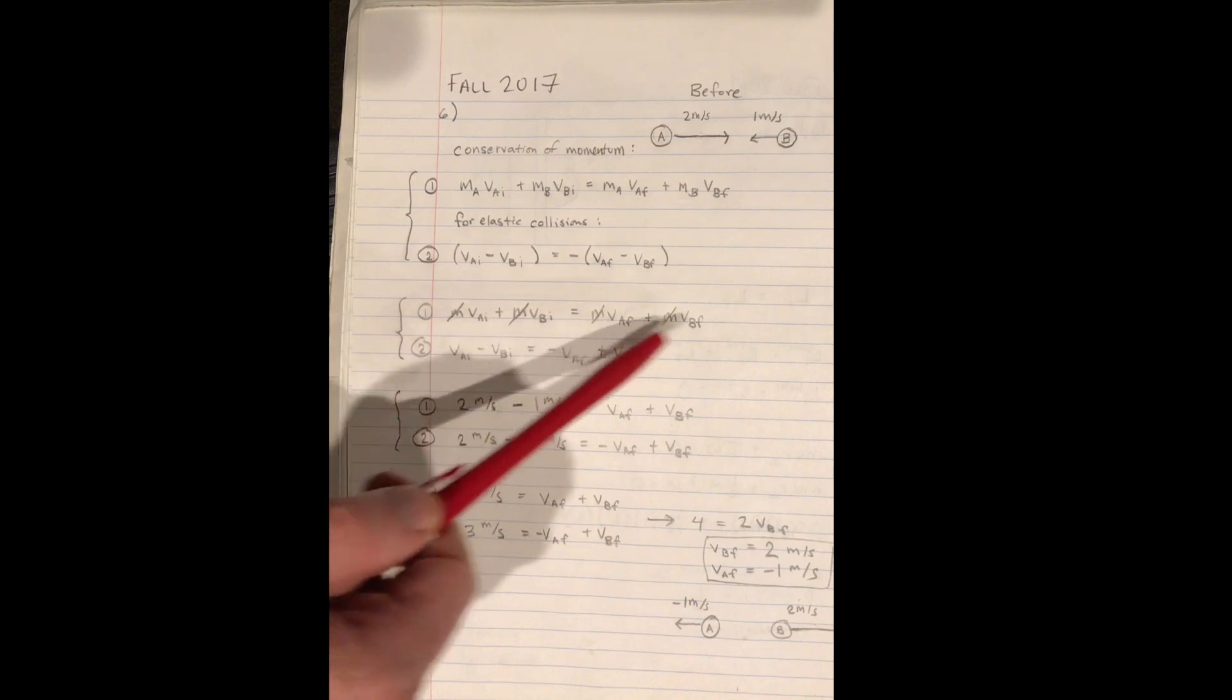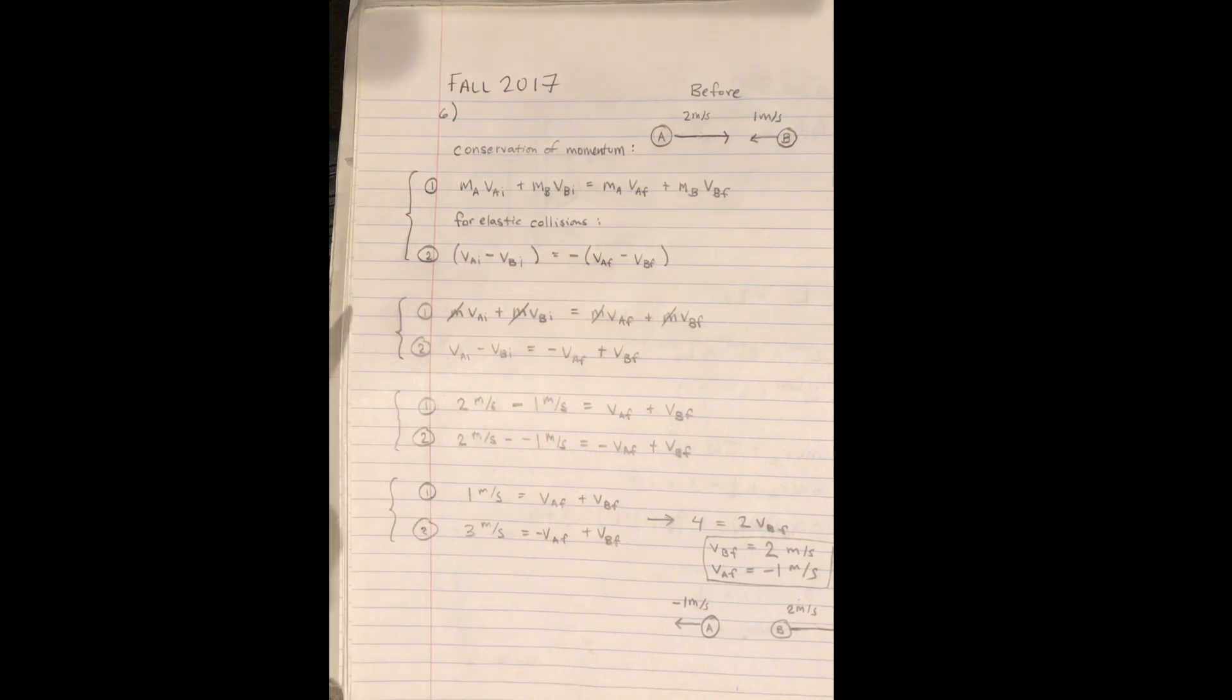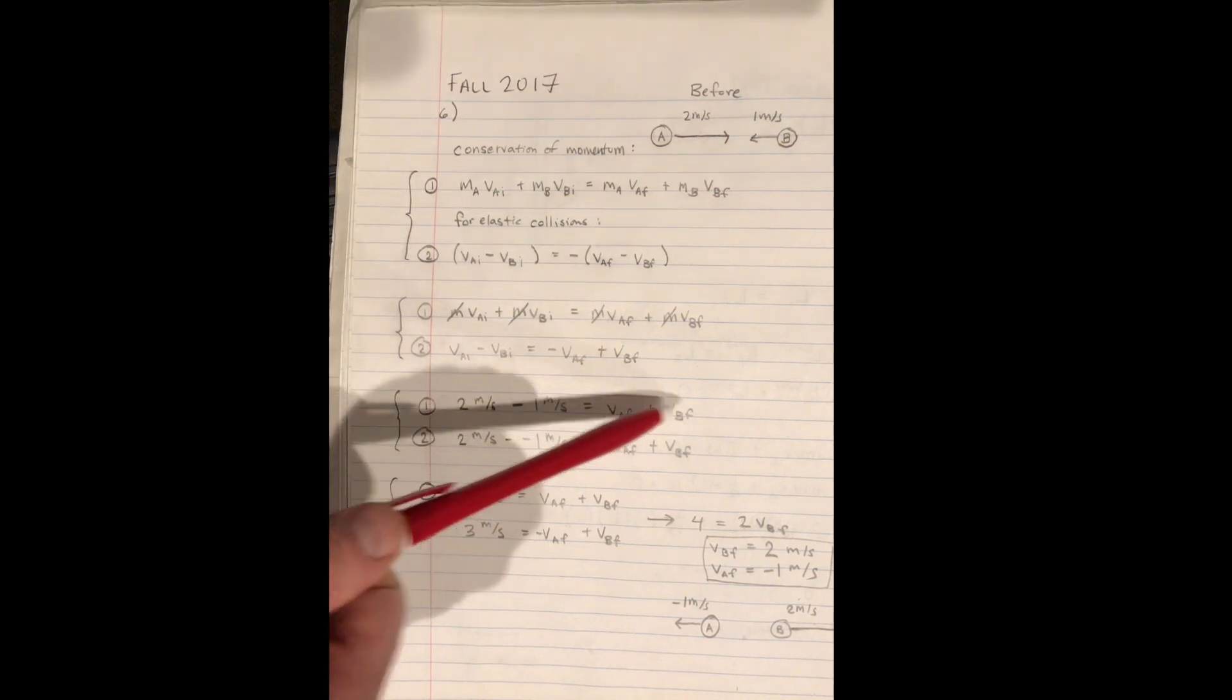If we rewrite equation number one, another thing that makes our life easier is the fact that the masses are the same for everything. So all the M's cancel out, and then we can rewrite it one last time and plug in numbers and we get that two minus one equals VAF plus VBF, which came from the conservation of momentum.